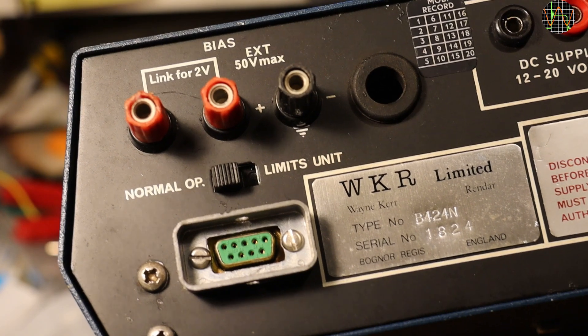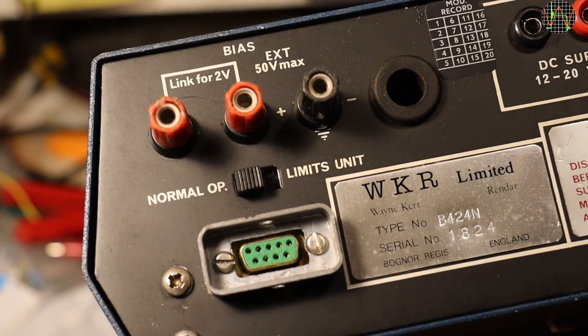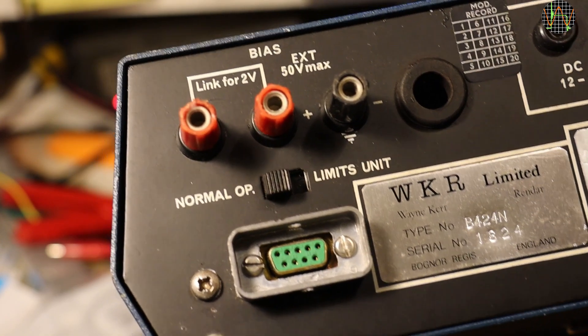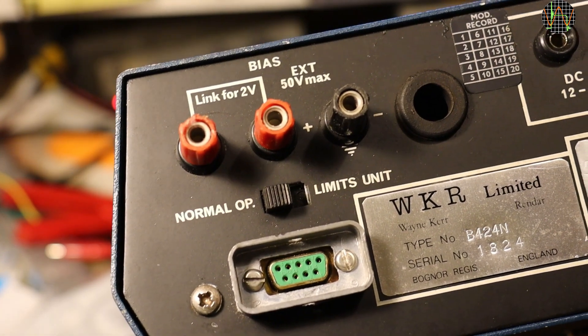On the rear we have connections to add either 2V for internal bias voltage if the two red terminals are bridged, or an external bias voltage between the middle right and the black terminal. Any bias is only applied when measuring capacitors.